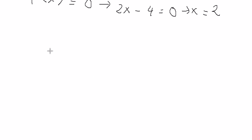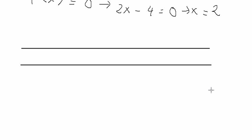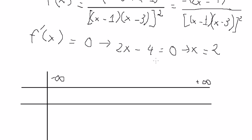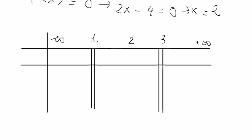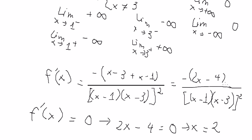Now we can create a variation table. We have negative infinity and positive infinity as boundaries, and we have the values 1, 2, and 3. We know that we cannot define the function at number 1. We have one critical point at x equals number 2. This gives positive on one side, then negative. Because we just drew about negative number 1 and substituted in here, you get positive for the first derivative of the function.